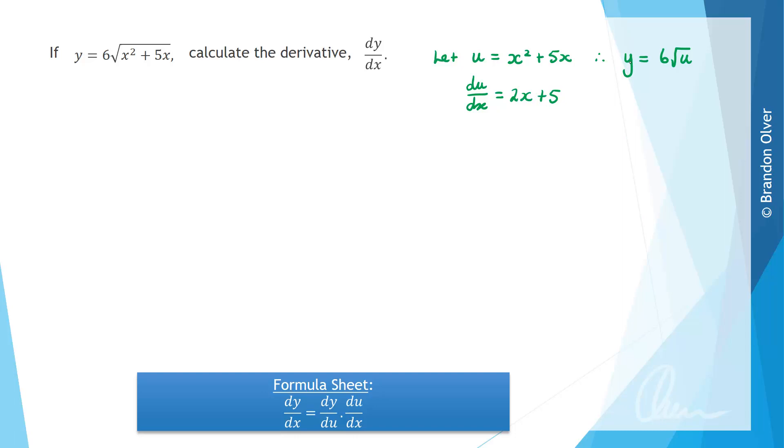And now before we calculate the derivative dy/du, it's useful to write y equals 6u to the power of a half, because we know how to differentiate when we have powers of n. So that means that dy/du is going to equal, and we take the power out the front, so the half times 6 leaves 3, and then we have u to the power of negative 1 half, when we subtract 1 from the power.